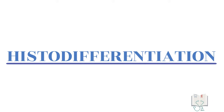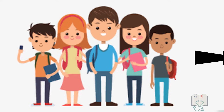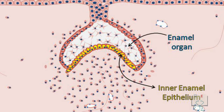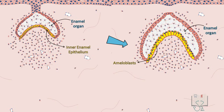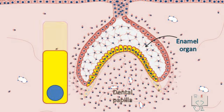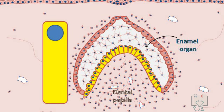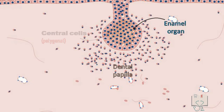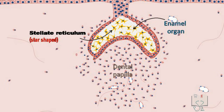Histodifferentiation means that immature cells undergo the process of maturation so they can carry out their specific functions. The inner enamel epithelium has to differentiate into ameloblasts, which will deposit enamel. Its histodifferentiation begins in the cap stage. The inner enamel epithelium starts as cuboidal cells, then becomes short columnar, then columnar, then tall columnar cells. These then show reversal of polarity and development of Tomes' processes, thus maturing into fully differentiated ameloblasts. The cells of the dental papilla also differentiate into odontoblasts.